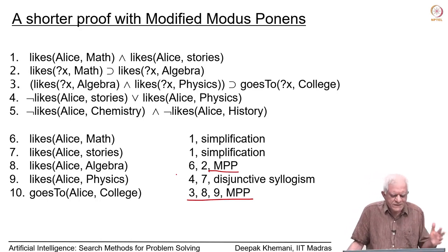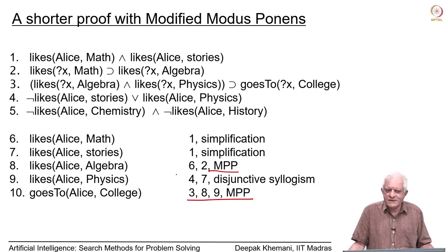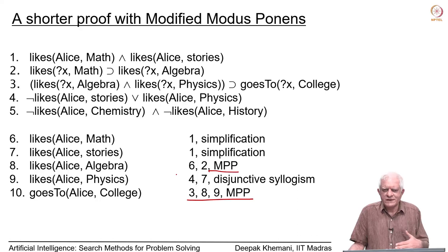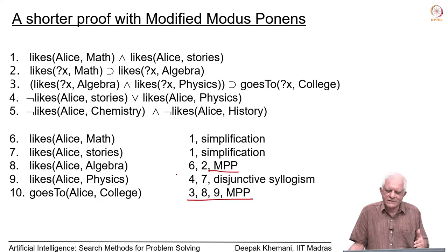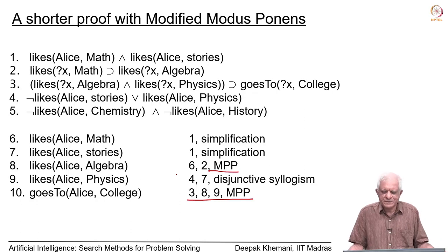This gives us the flavor of forward chaining and forward reasoning in first-order logic, and we get some idea of how we can generate proofs for formulas — this process is called theorem proving. We have looked at one aspect: forward reasoning. We will go back and look at backward reasoning, or backward chaining, in the next session.